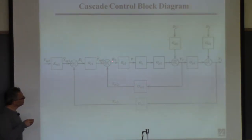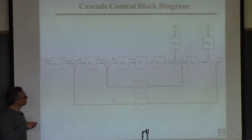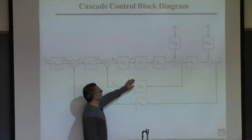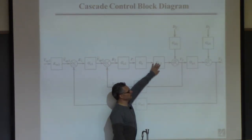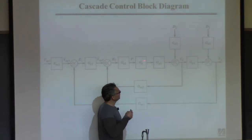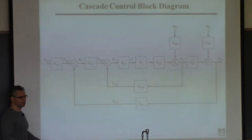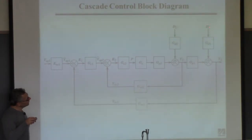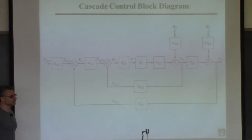In the inner loop, we measure this output — and the selection of this output is critical for the inner loop to be effective. We compare it to the set point provided by the outer loop, generate an error signal, it goes through the inner controller, generates a signal sent to the valve. There might be an inner process; for the examples I've given you the inner process is the valve. We might also have two types of disturbances: one that enters the outer loop and one that enters the inner loop.